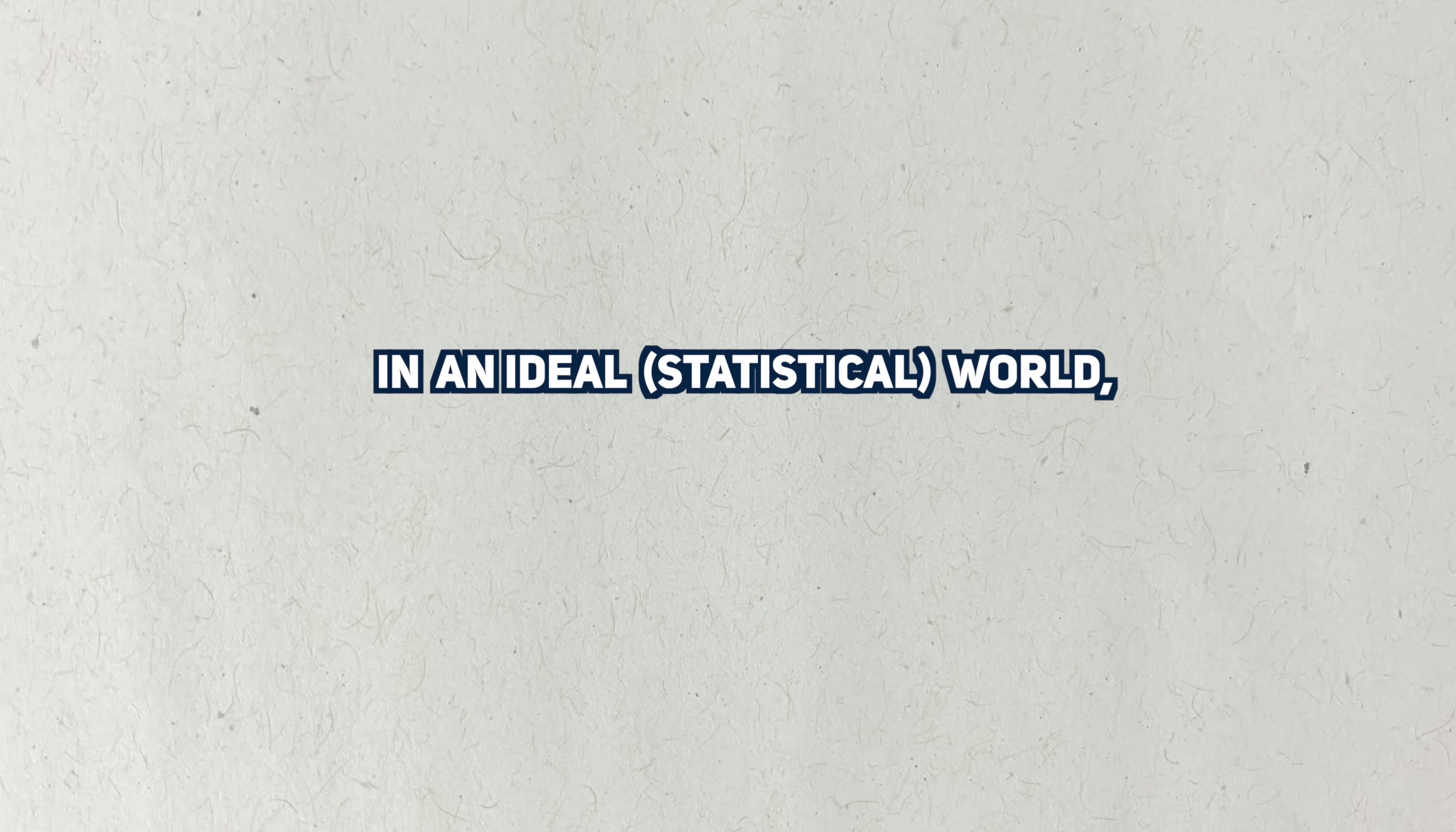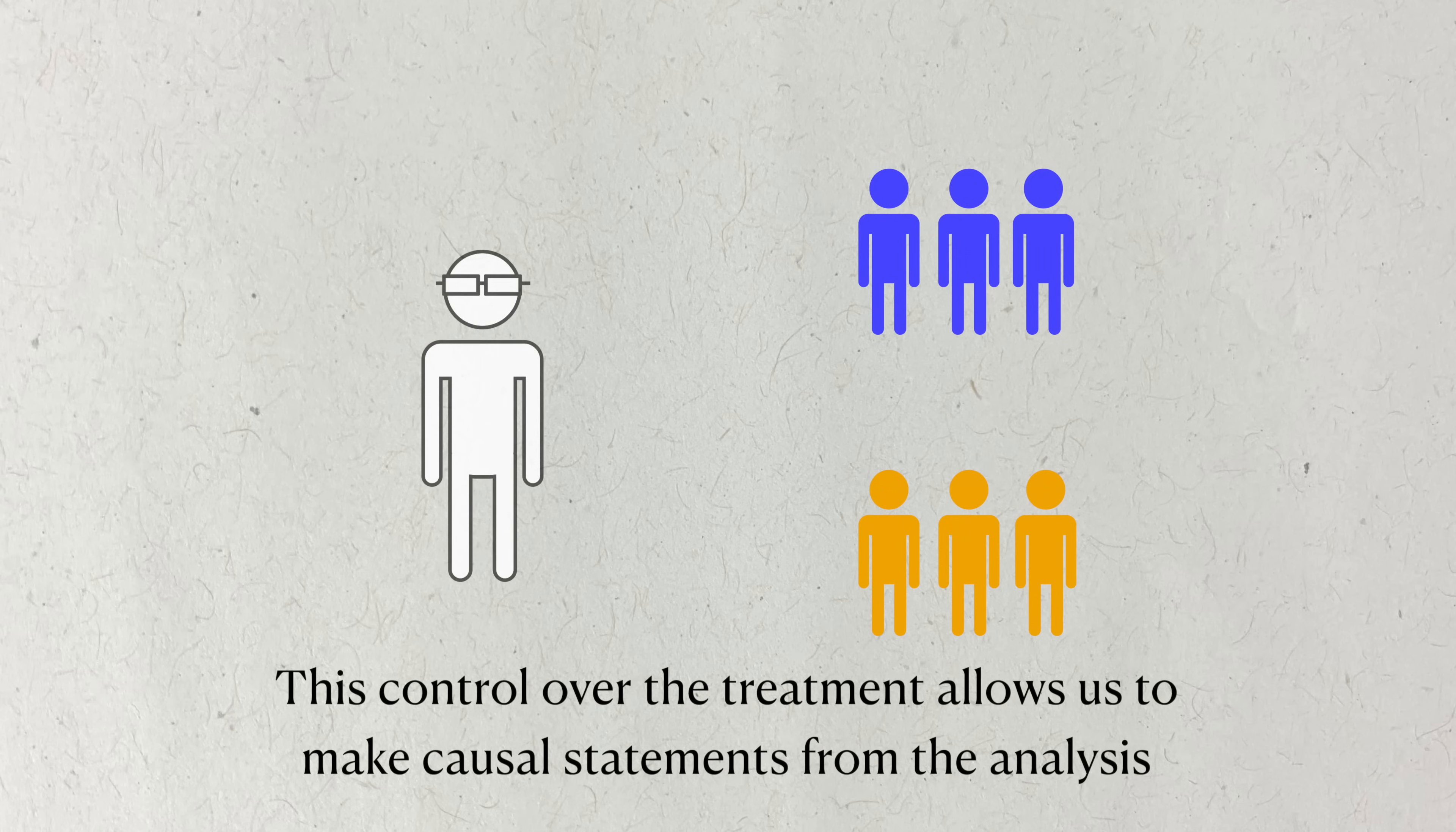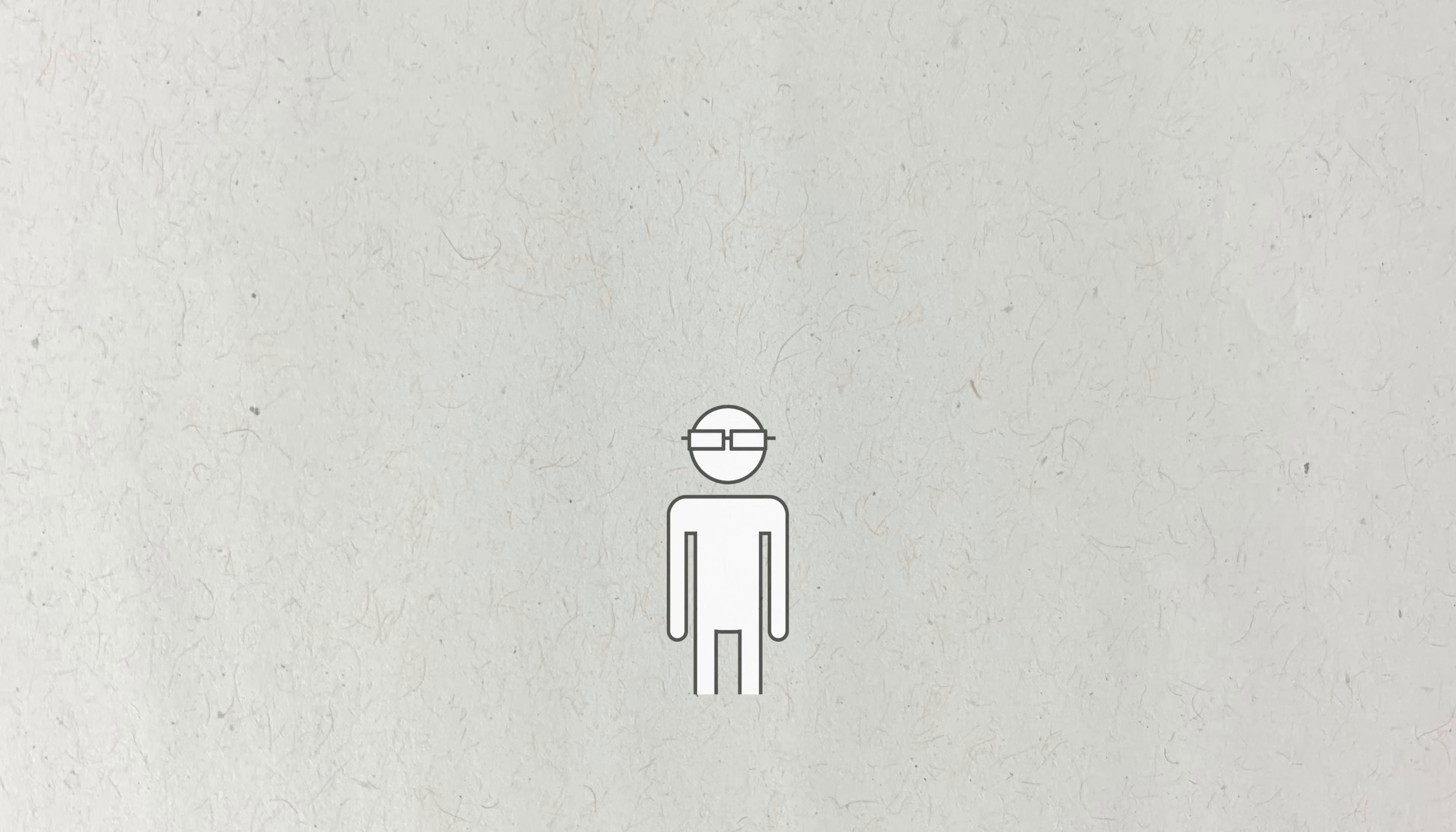In an ideal world, all data comes from experimental data, where a researcher can control who receives an intervention and who doesn't. When we can do this in a carefully controlled manner, such as in an RCT, we can claim cause and effect between an intervention and some outcome of interest. But we live in the real world, and the real world gives us observational data sometimes, where we can't control who receives a treatment and who doesn't. We can still perform statistical analyses on observational data, but we cannot make the same causal claims about them, only correlational claims.